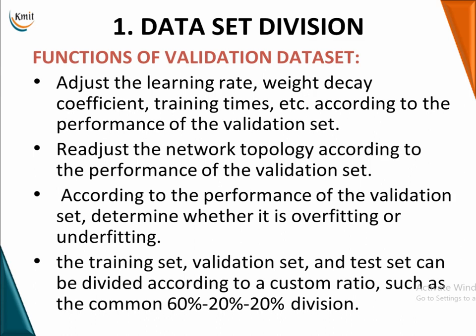The validation dataset helps you adjust hyperparameters such as the learning rate of the model. The learning rate plays a crucial role in determining when you attain the minima during learning. In order to adjust the speed of learning, you adjust the learning rate, along with the weight decay coefficient and the duration of training — all of these are adjusted according to the performance of the validation set.